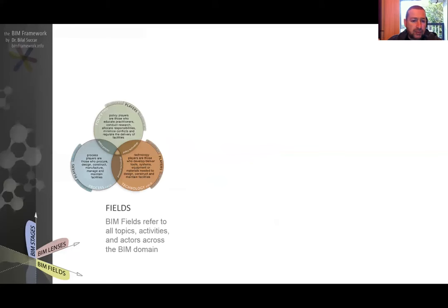On the X-axis, we have BIM fields, represented by a Venn diagram—a knowledge model with three overlapping circles. BIM fields represent all the topics, activities, and stakeholders within the BIM domain.